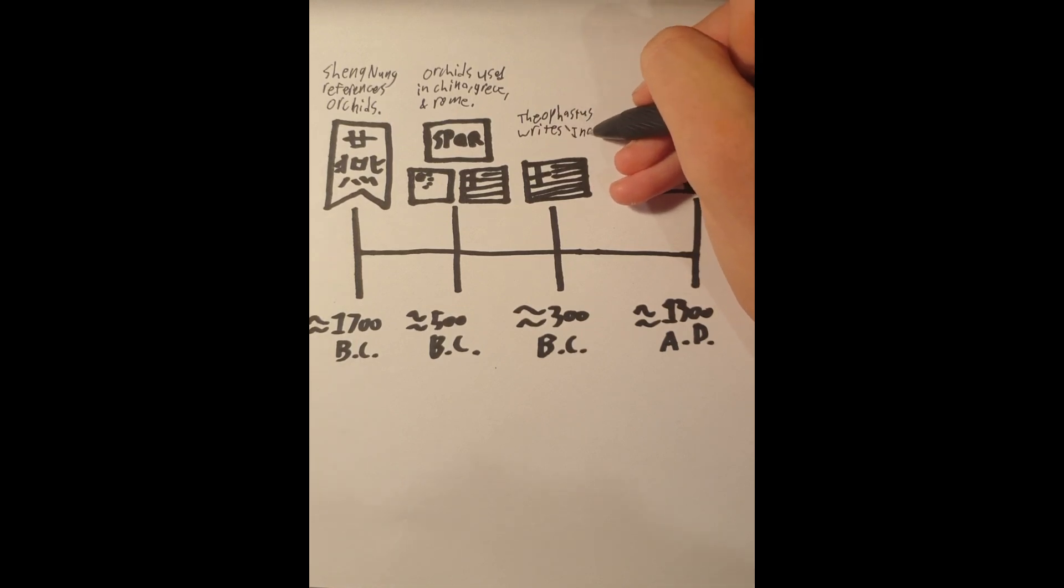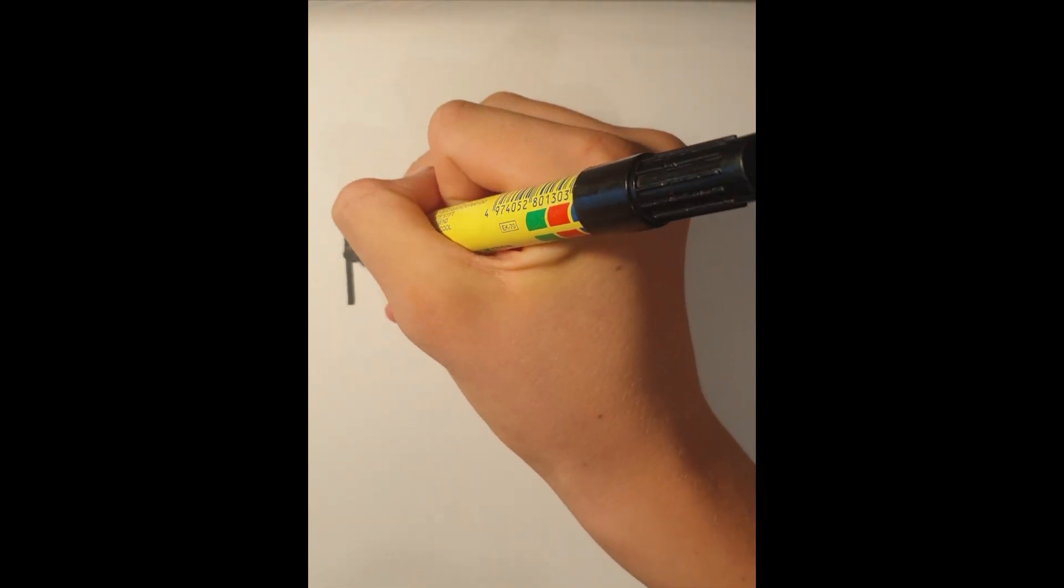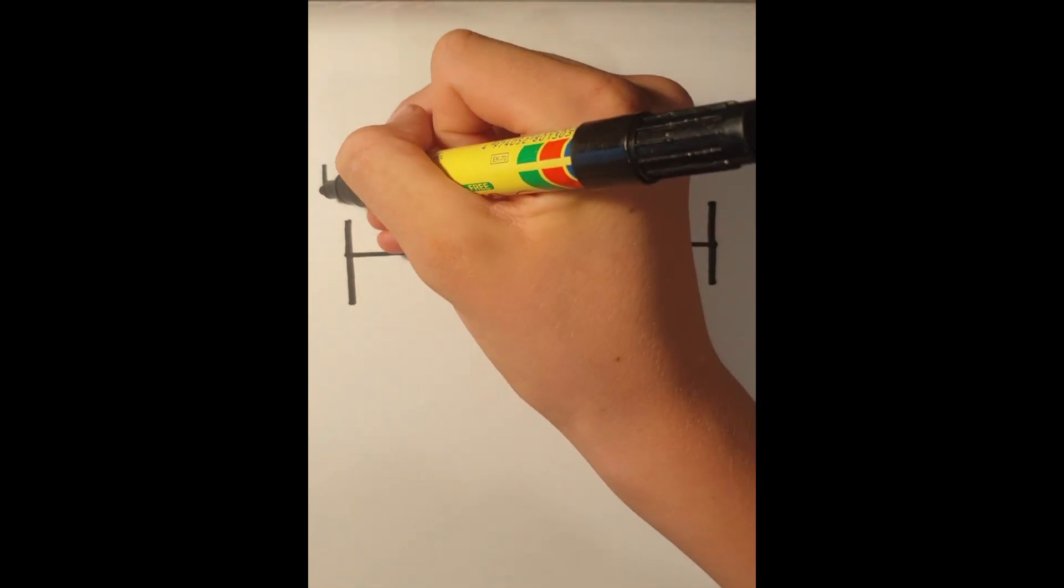Some old Aztec inscriptions told about how the vanilla bean was used by their ancestors to flavor a drink made with cocoa. It was also used by the Mayans, and later the Spanish conquerors, who brought the vanilla bean to Europe in 1510.